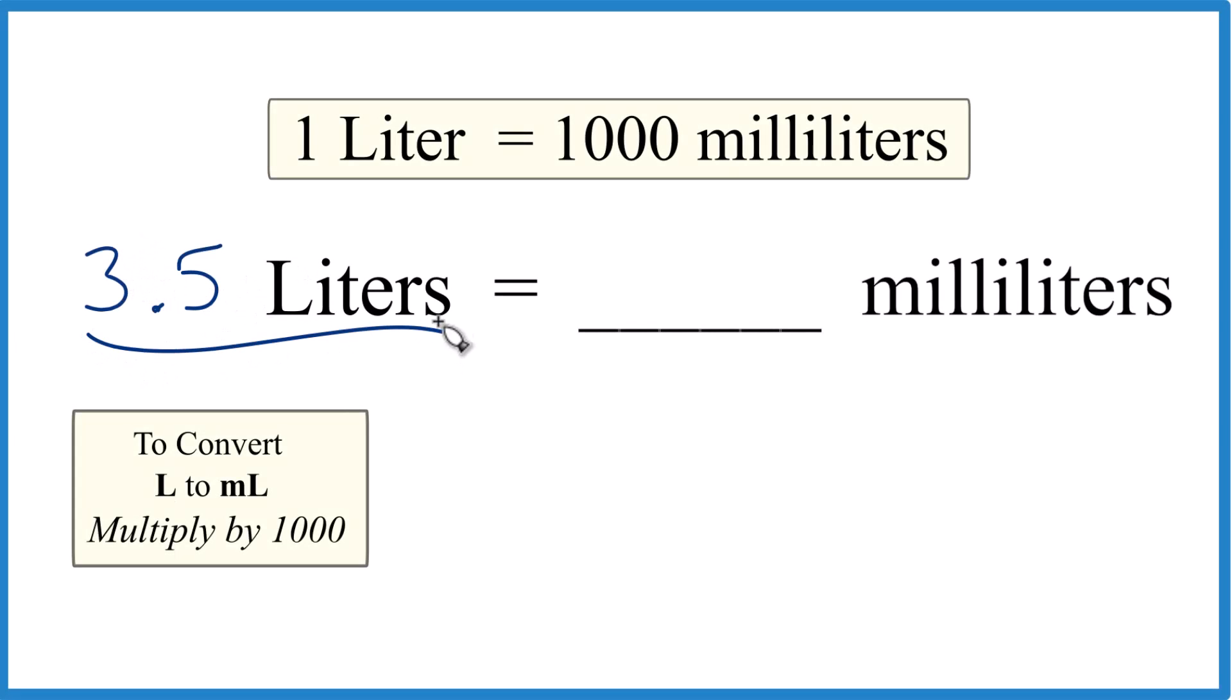Let's convert 3.5 liters to milliliters. Here's how you do it. So first off, we know that one liter is a thousand milliliters. That's our conversion factor.